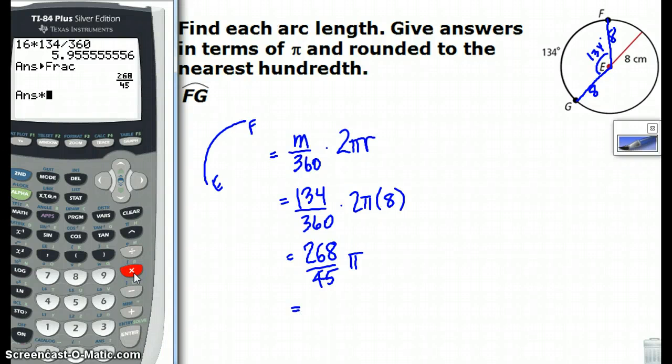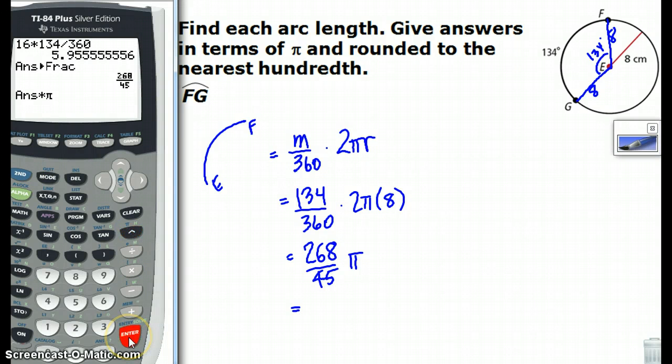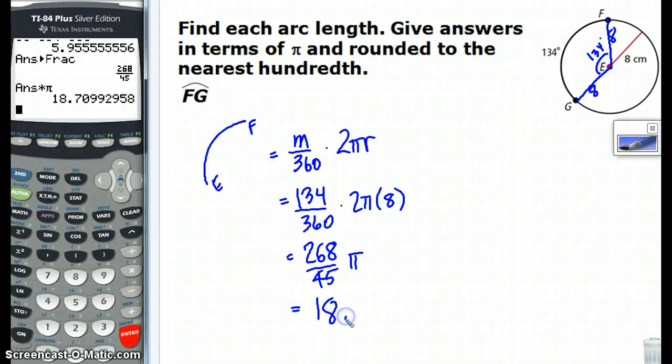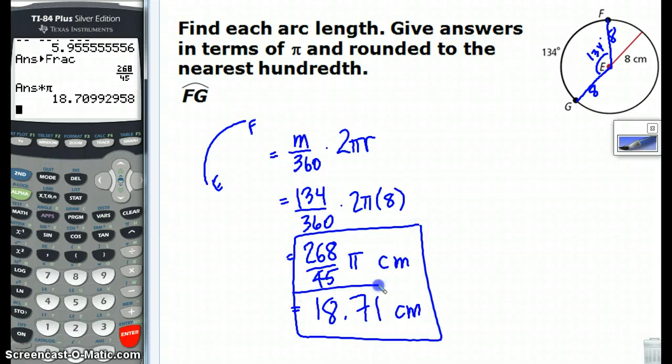So, we take that, and we multiply times pi. And there's our pretty answer. 18.71. And our units on both of these are going to be centimeters. You'll notice it's not square centimeters, because it's the length of something, as if we measured it with a ruler. So, there are my two answers. And that's the length from E to F along that arc. 18.71 centimeters.